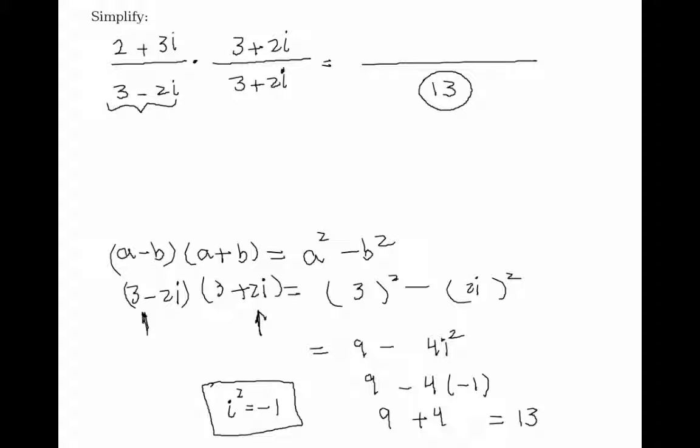Now, at the top of the fraction, I need to multiply these two binomials, and everywhere I see i squared, I'm going to replace it with minus 1. So I get 2 times 3, that's 6. 2 times plus 2i gives me plus 4i. Then 3i times 3 gives me plus 9i. And 3i times 2i gives me plus 6i squared.